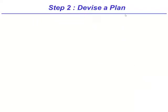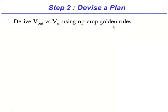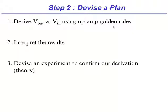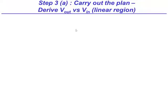Here is the plan of attack. We will simply derive Vout versus Vin using the op-amp golden rules. Next we'll interpret the transfer characteristic. That is, we'll try to understand what is going on. Finally, we need to come up with an experiment to confirm our derivation. Amir, why don't you derive Vout versus Vin? It will be very good practice for you in applying the op-amp golden rules.